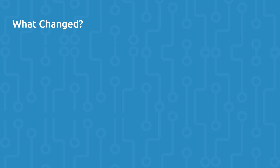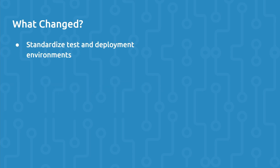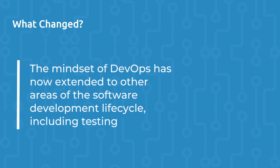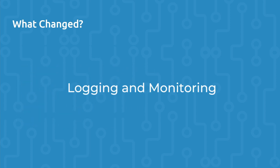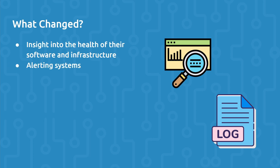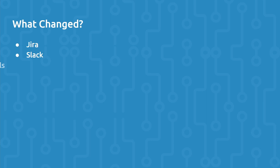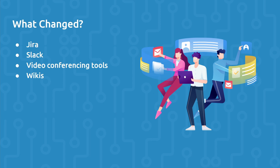It's also worth mentioning the practice of containerization using tools like Docker, which enabled standardized test and deployment environments, as well as many other benefits. The mindset of DevOps has now extended to other areas of the software development lifecycle, including testing. Logging and monitoring services provided both development and operations teams insight into the health of their software and infrastructure, as well as automated alerting systems. Collaboration and project management tools also improved over time — tools like Jira, Slack, video conferencing, and documentation software improved collaboration and communication within and between teams.